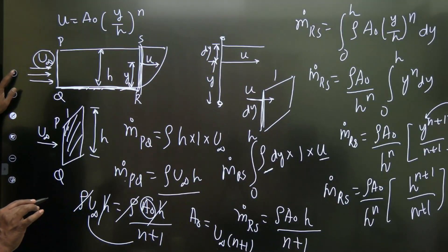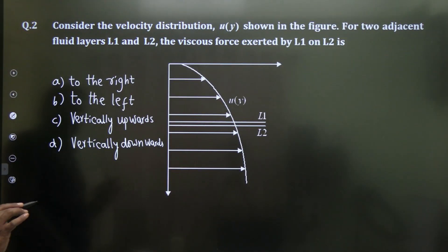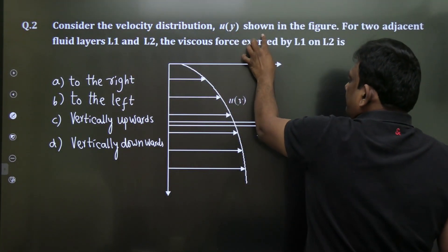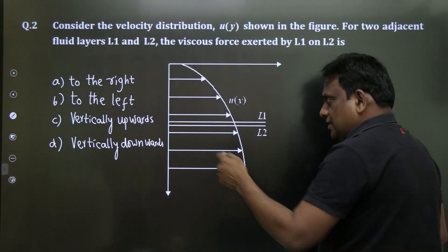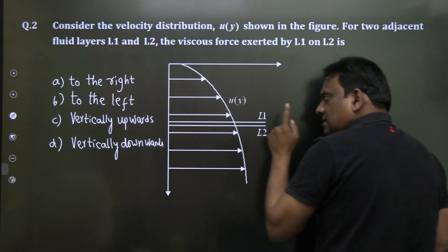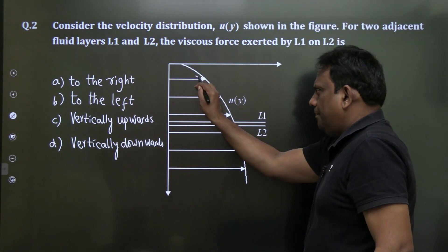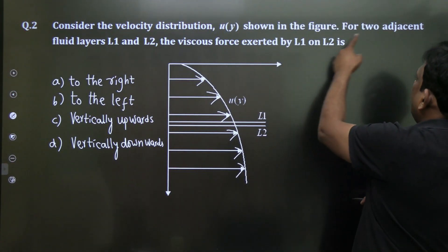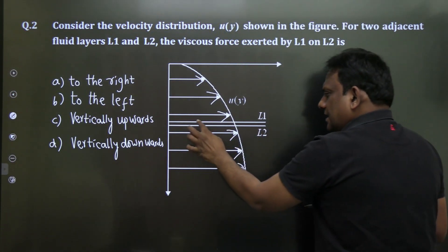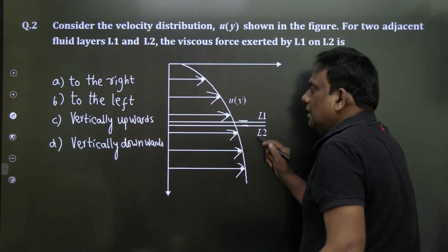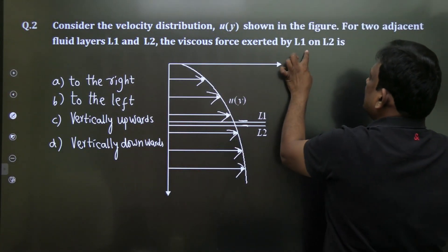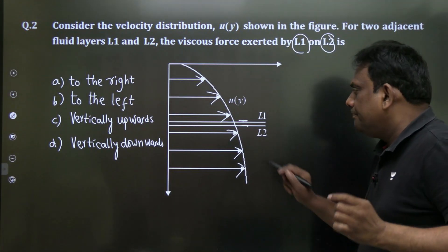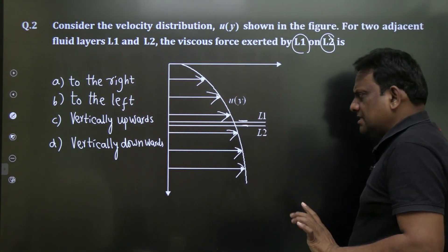Now the next question: consider the velocity distribution u(y). The direction of velocity is purely in the x-direction, as shown in the figure. Between two adjacent layers L1 and L2, the viscous forces exerted by L1 on L2 need to be determined.